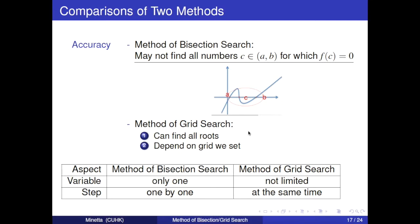For variable, method of bisection search only need one variable, where method of grid search is not limited. What's more, for steps, the former need to calculate one by one, where the latter can calculate at the same time. And comparisons finished.